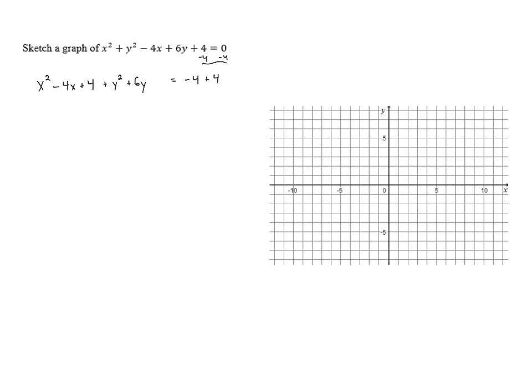Now let's look at the y's. Here, the coefficient on the y is 6. When we divide that by 2, we get 3, and when we square that, we get 9. So we need to add 9 to complete the square. But again, that means we need to add 9 to the other side of the equation as well.